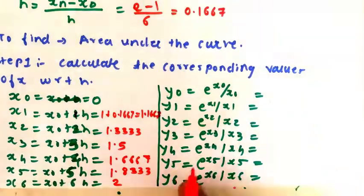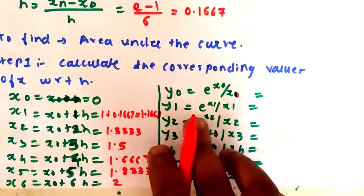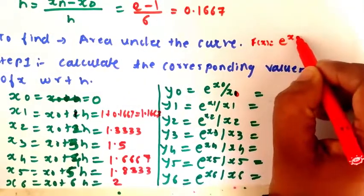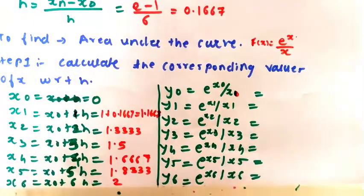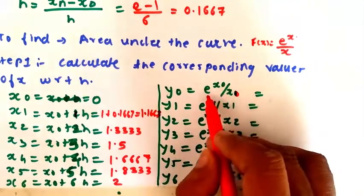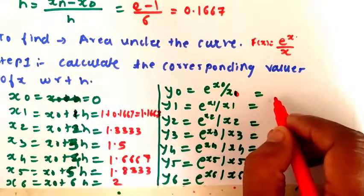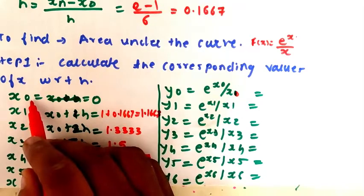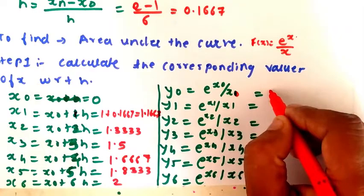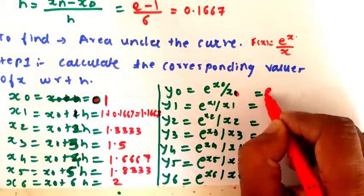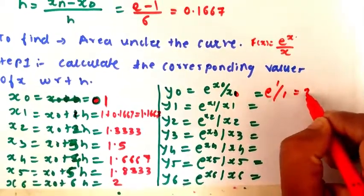Next, we have to find out the corresponding value of y with respect to x. The function is y equals e raised to x divided by x. For y0, we substitute x0 which is 1, so y0 equals e raised to 1 divided by 1, which equals 2.7182.